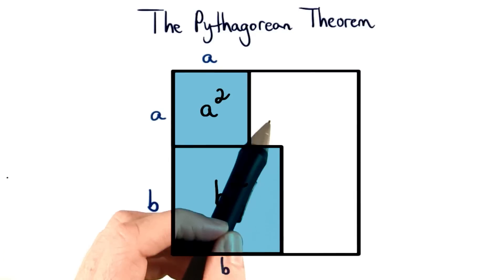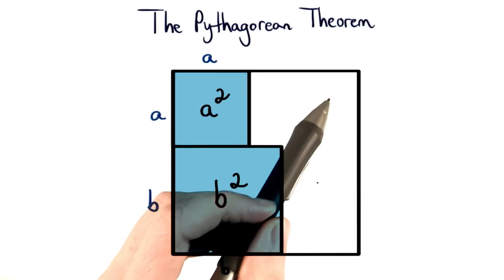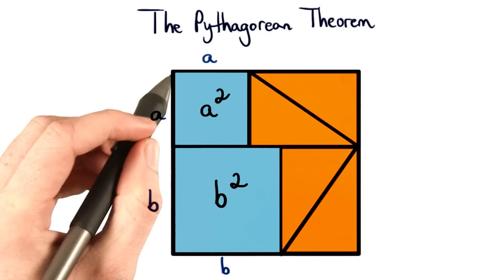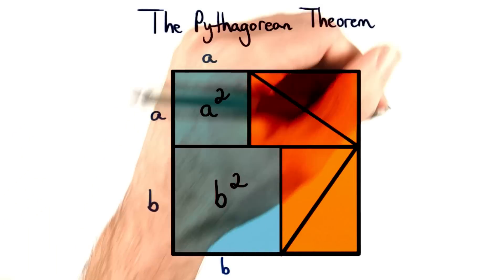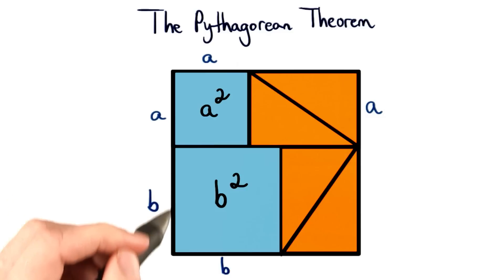And now what I'm going to do is break this white space up into four congruent rectangles. If this length is a, then we know that this length is also a. And we know if this length is b, then this length is also b.